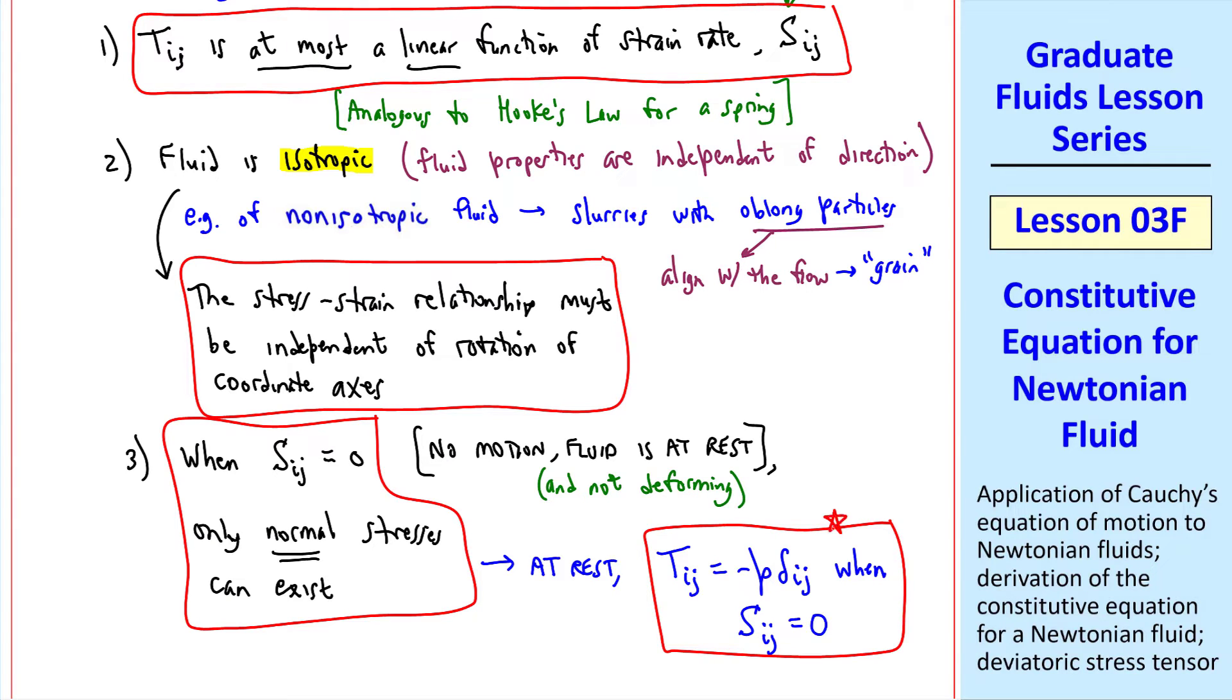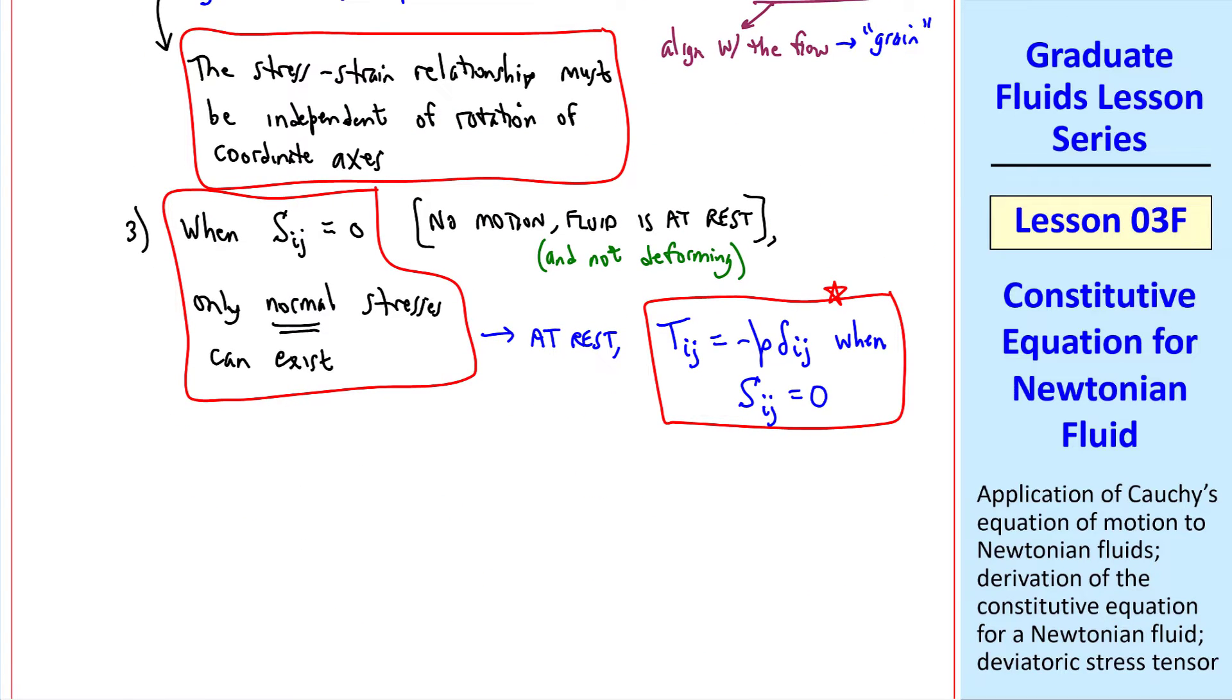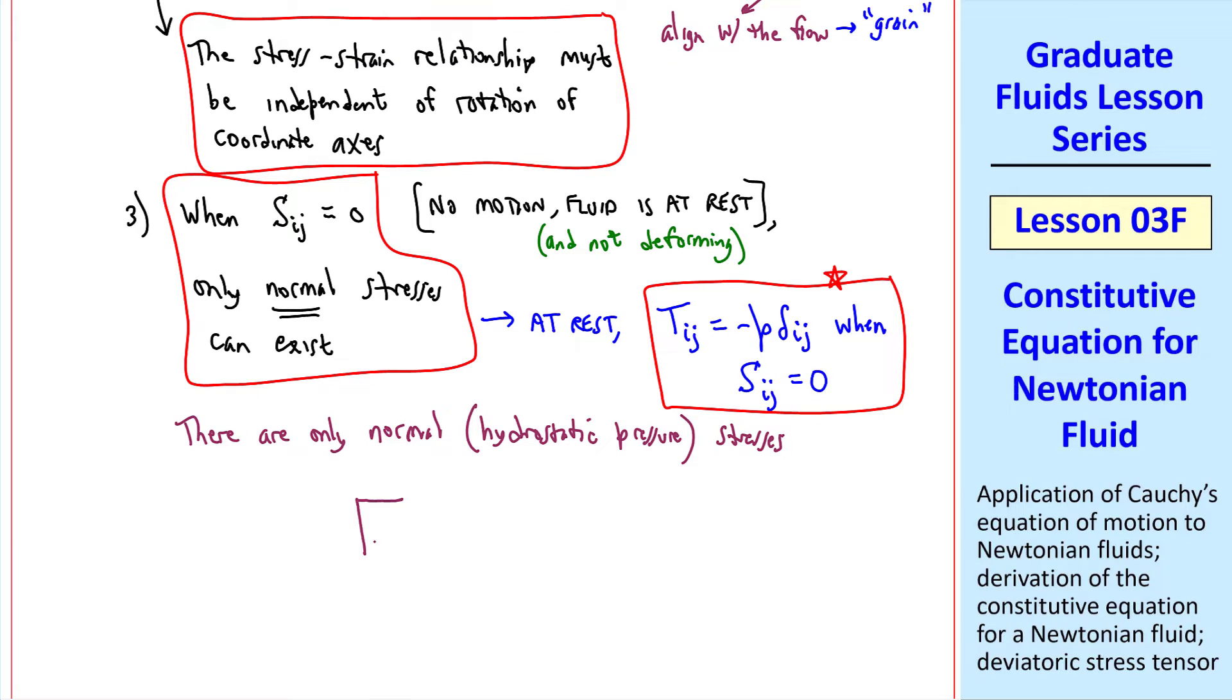This is the mathematical way of expressing Stokes' third assumption. What we're saying is that the only stress is pressure. There are only normal hydrostatic pressure stresses. If this is a little fluid element, we can have pressure acting on the surfaces. But you can see that these are all normal stresses. There are no shear stresses when the flow is stationary.